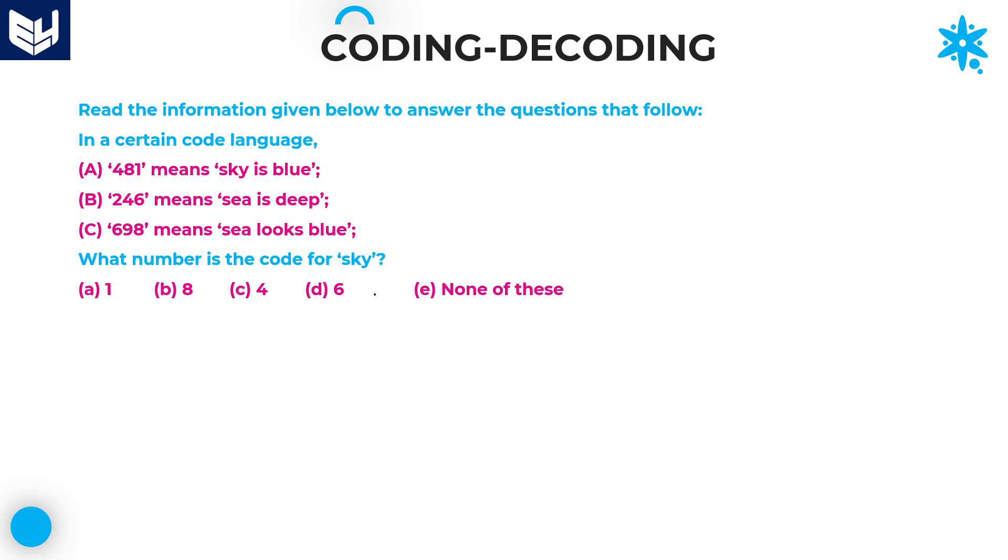Finally the last question is sky. Sky is also not there in any of the sentences. Therefore sky equals one, option A. Guys, I hope you enjoyed the session. This is a very simple question, and you can expect at least three to five questions from this model whenever you're appearing for any competitive examinations or placement drives. That's all about this session. Thank you very much for watching.